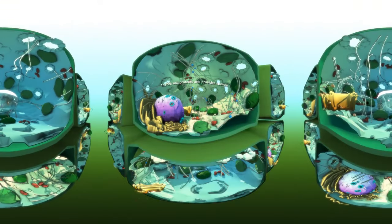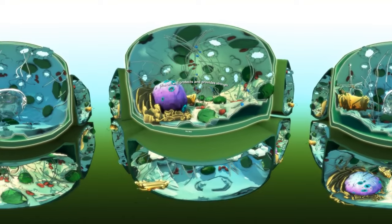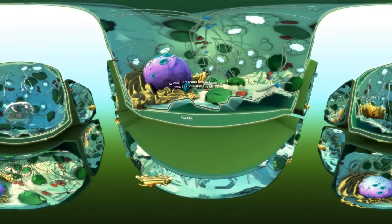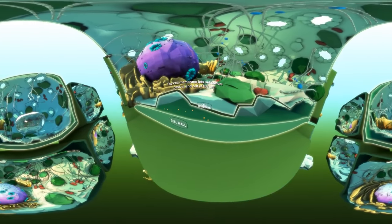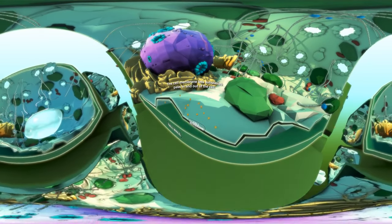To get in or out of a plant cell, you'd need to pass through the cell wall and cell membrane. The cell wall provides protection and strength for the cell, a bit like an exoskeleton, while the cell membrane lets substances pass in and out of the cell.